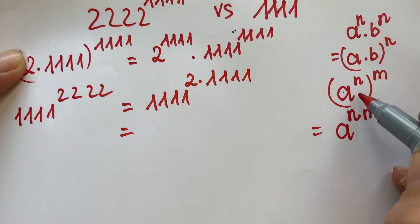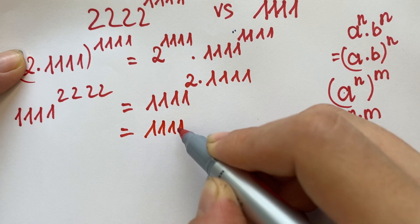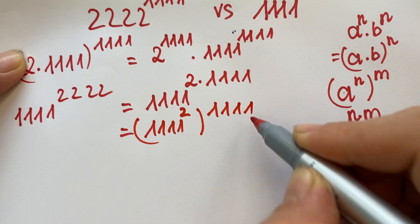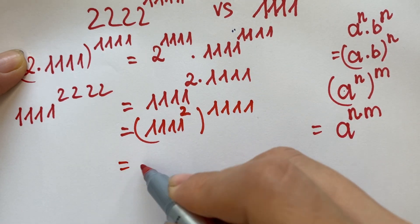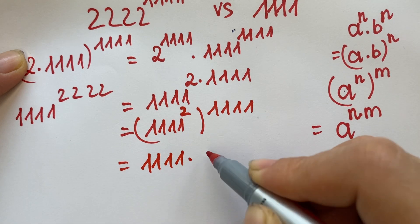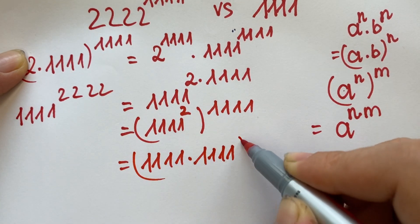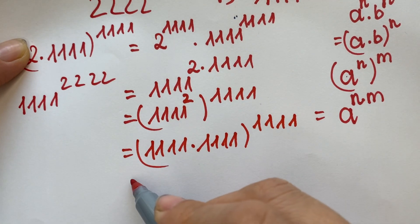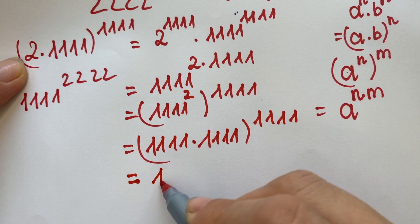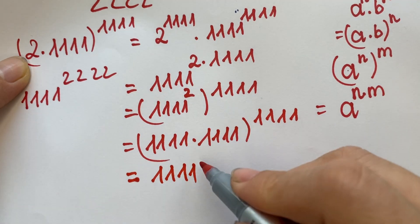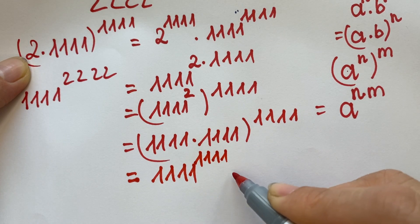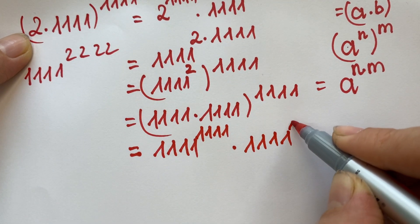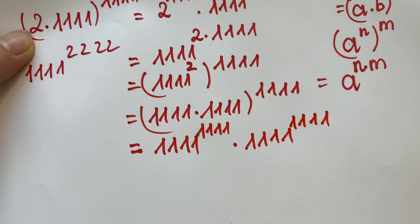Applying the formula, we get 1111^2222 = (1111^2)^1111. So therefore we have (1111 times 1111)^1111, which equals (1111^2)^1111.